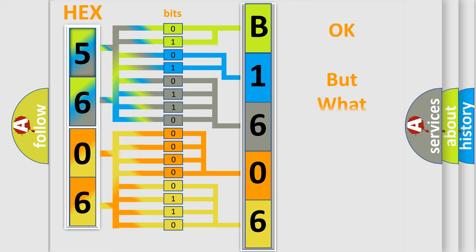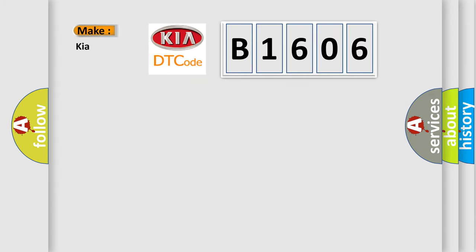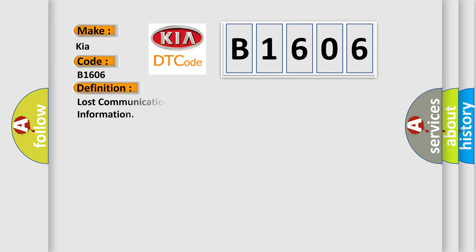The number itself does not make sense to us if we cannot assign information about what it actually expresses. So, what does the diagnostic trouble code B1606 interpret specifically for car manufacturers? The basic definition is: Lost communication with central electronic module — general failure information.